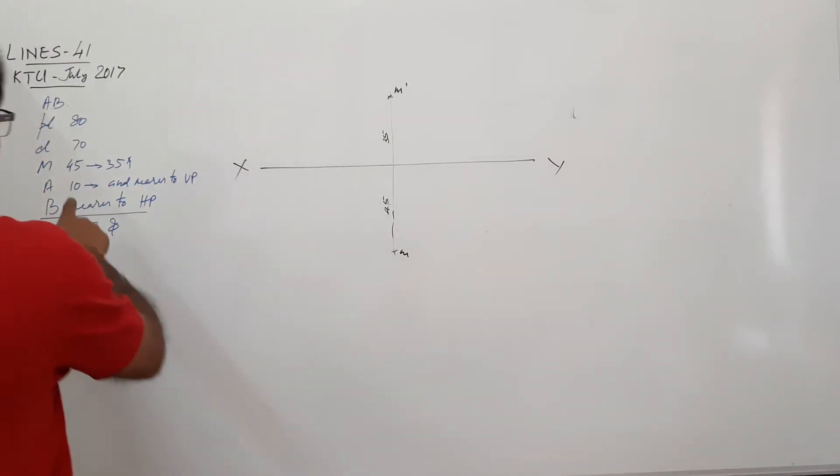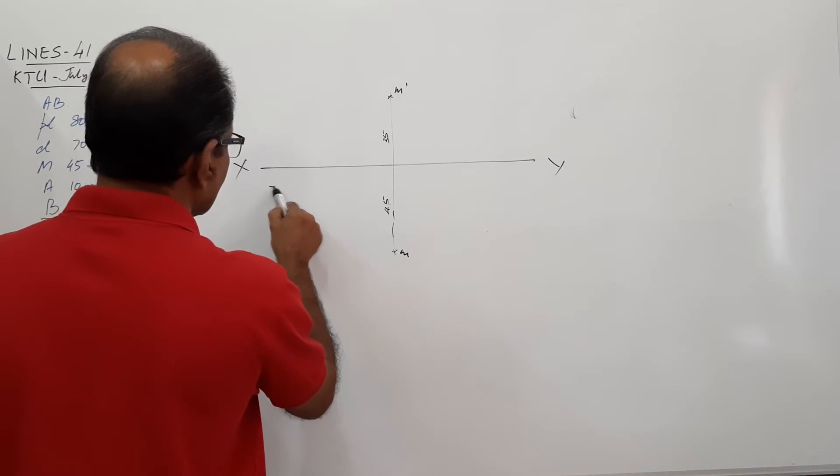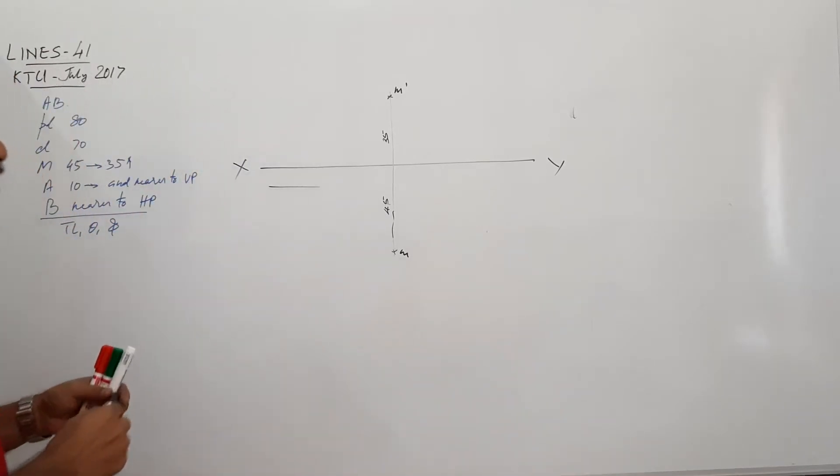Now, A is 10 mm in front of VP. Somewhere around this is A, 10 mm.